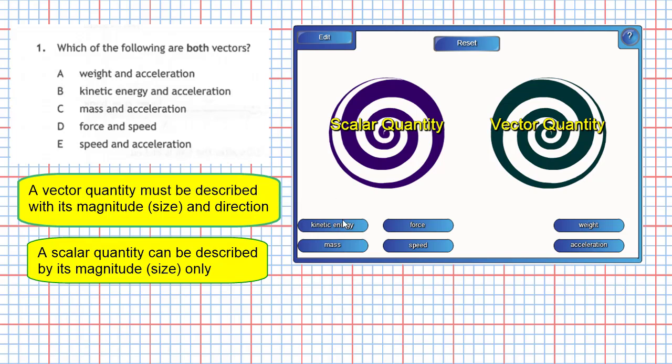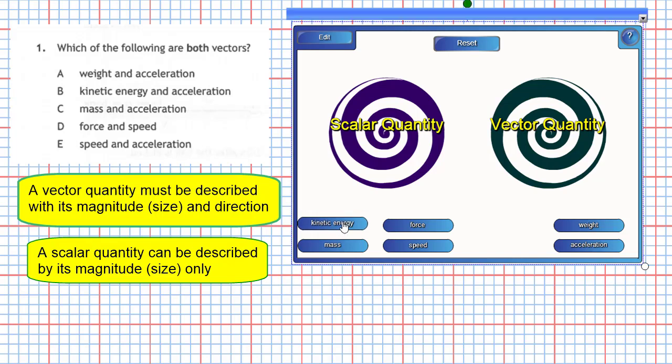Let's begin with kinetic energy. Kinetic energy doesn't really need a direction to describe it fully. It just needs a number, a magnitude. So we'd say that kinetic energy is a scalar quantity, and that's correct. It sinks into the scalar quantity vortex.